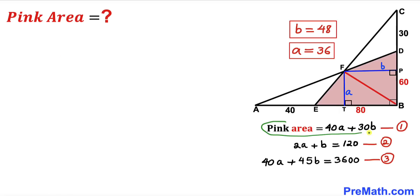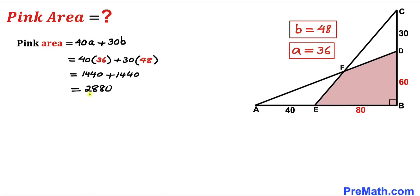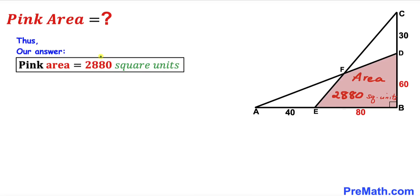Now using Equation 1 — pink area equals 40a plus 30b — and substituting a equals 36 and b equals 48, we get 40 times 36 plus 30 times 48, which simplifies to 2880 square units. So the area of the pink shaded region is 2880 square units. Thanks for watching, and please don't forget to subscribe to my channel for more exciting videos!